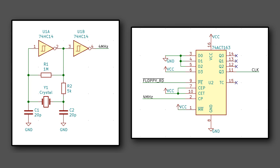With a 4 MHz oscillator going through a 4-bit counter, the last high bit of that counter forms a square wave at 250 kHz, because it's essentially a divide by 16. The advantage of this is that I can now fully control the phase of the signal. If I want to set the phase to a particular point, all I have to do is preload the counter with a specific 4-bit value, which says how far through the wave I want it to be at that moment.